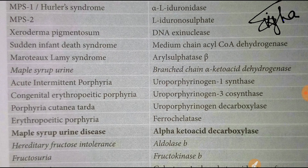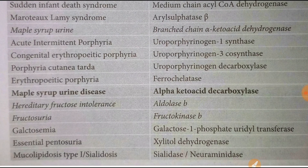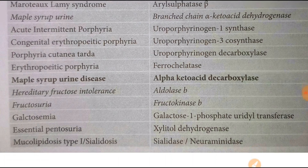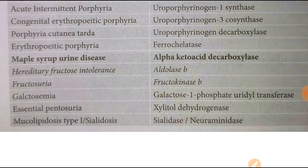Maroteaux-Lamy syndrome — arylsulfatase B. Maple syrup urine disease — branched-chain alpha-ketoacid dehydrogenase. Acute intermittent porphyria — uroporphyrinogen I synthase. Congenital erythropoietic porphyria — uroporphyrinogen III cosynthase. Porphyria cutanea tarda — uroporphyrinogen decarboxylase. Erythropoietic porphyria — ferrochelatase.